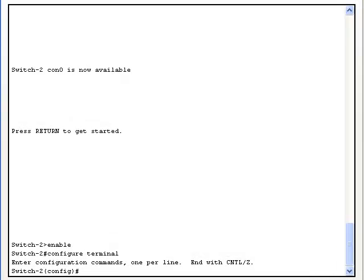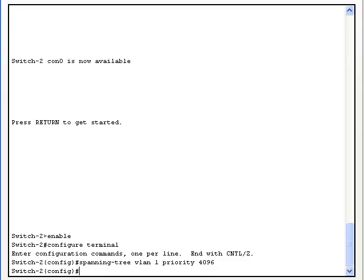We are looking at the terminal window of switch 2. Now, let's make switch 2 the backup root bridge by setting its priority to a slightly higher number.